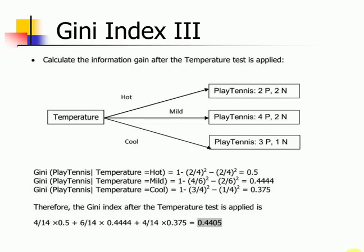Similarly, when you split based on temperature, you get a Gini index as 0.4405, or the net reduction in your impurity when we split based on temperature is 0.4405.